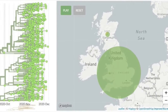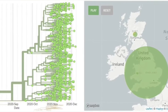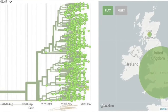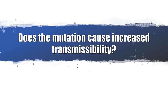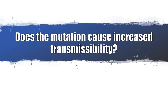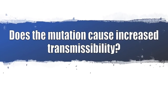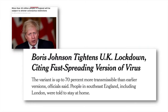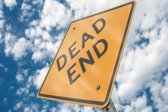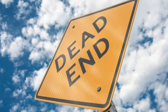Regardless of the process, it seems pretty clear that this lineage originated in England. And that brings us to the third and final question: does this matter? Are these mutations really causing the virus to spread faster? Let's start with the claims. Boris Johnson said the virus is 70% more transmissible, which was widely reported in the media. The truth is, this is where our knowledge about what's going on reaches its limits.